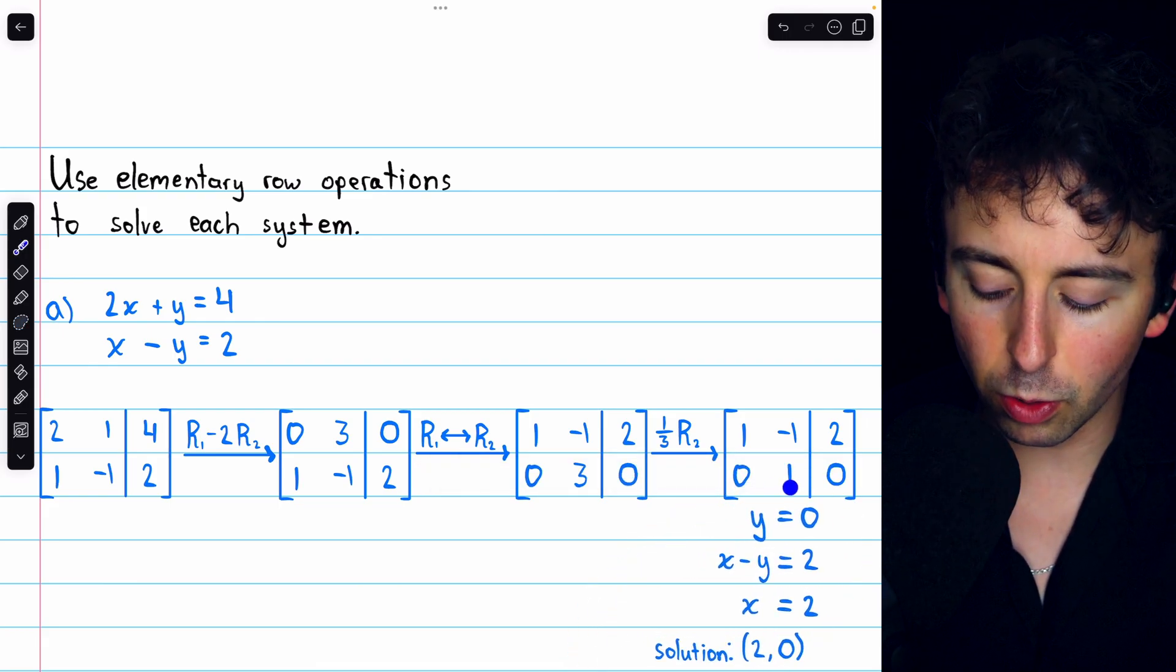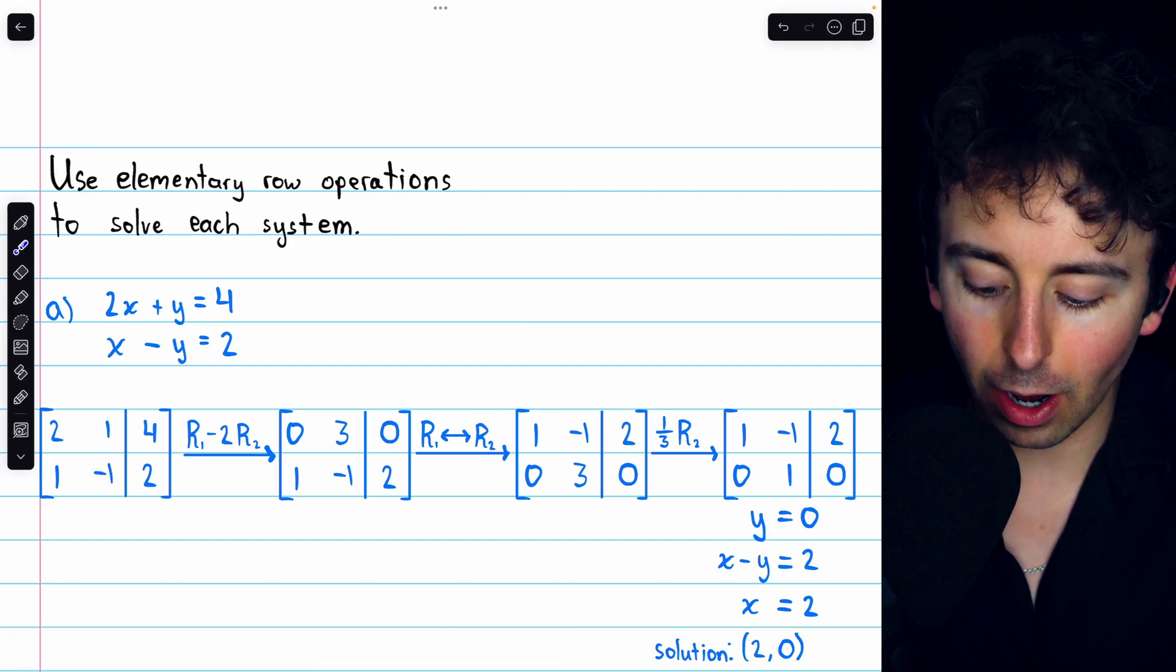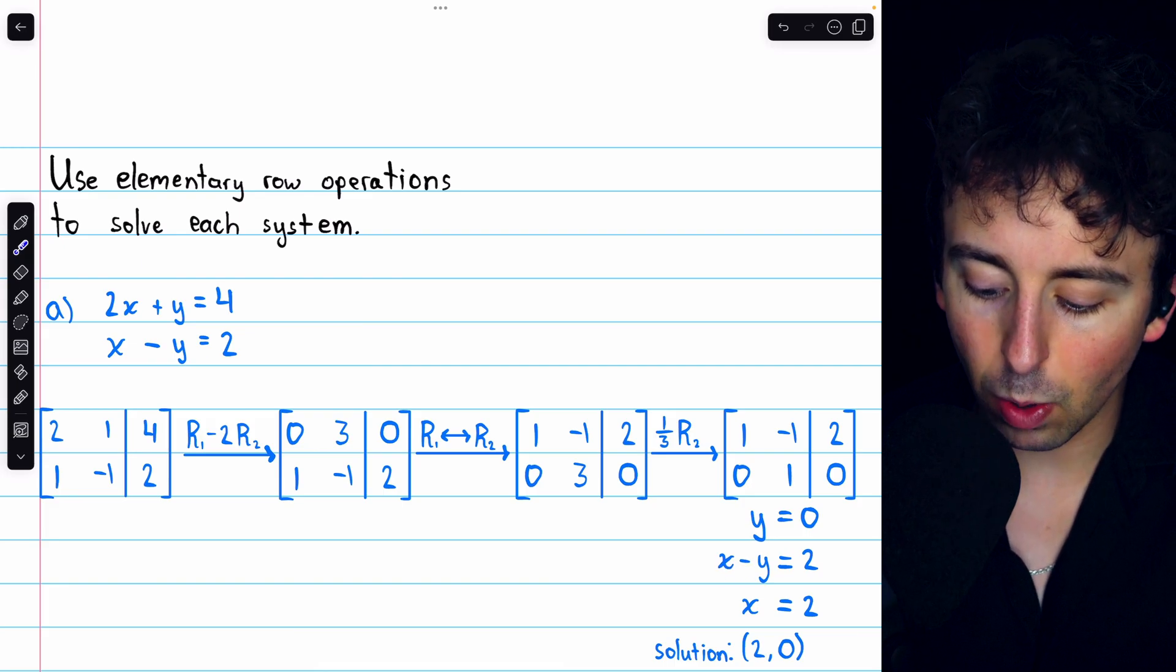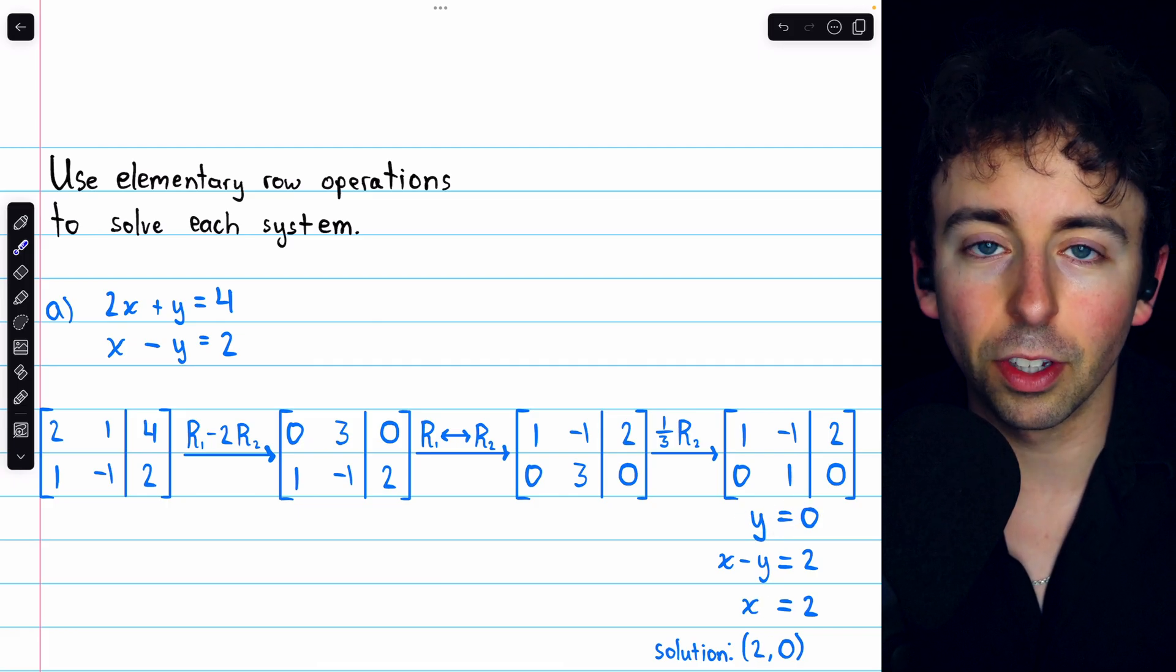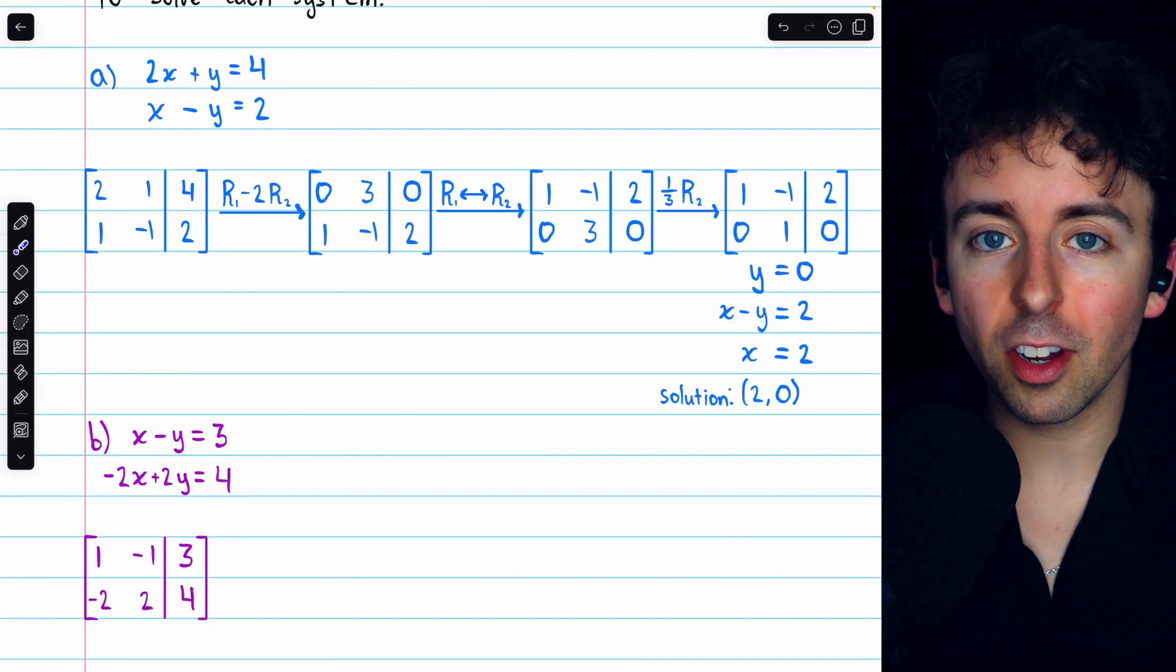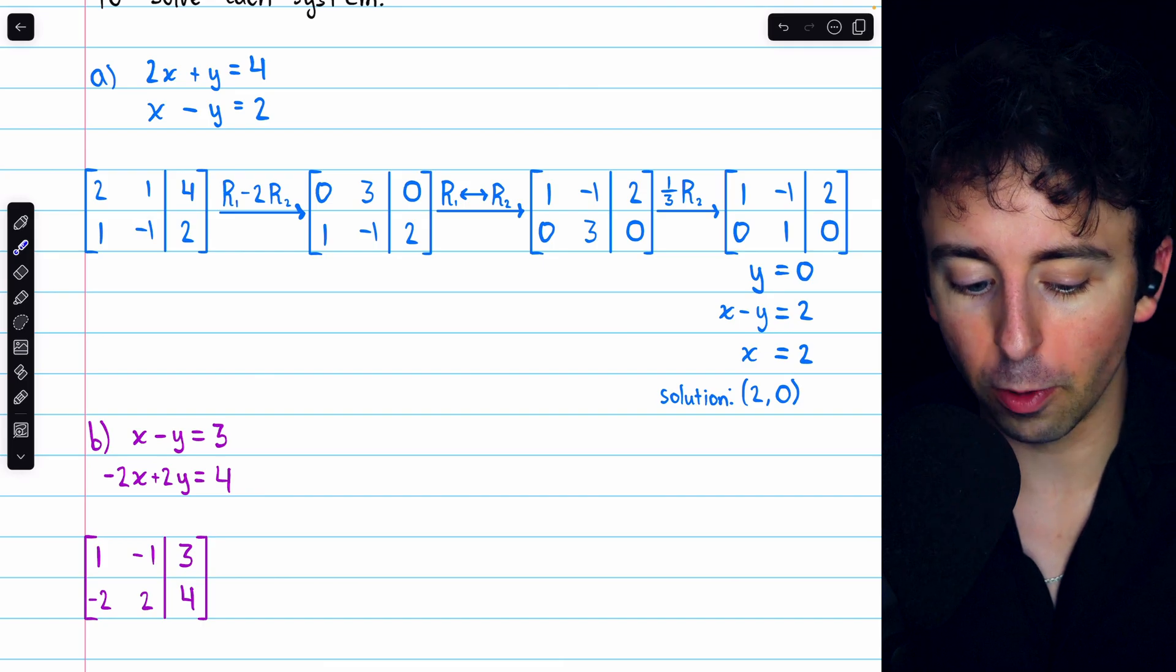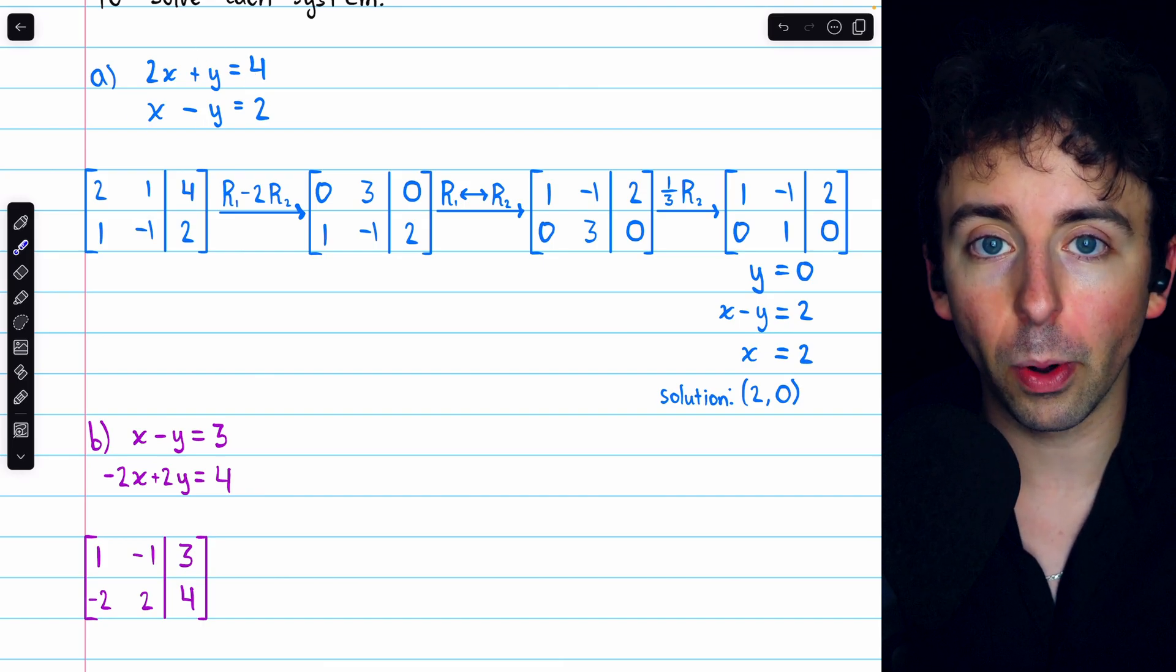From row 2, we have that 1y is equal to 0. And from row 1, we have that x minus y is equal to 2. Then, of course, because y is equal to 0, x must equal 2, since x minus 0 must equal 2. So this system has exactly one solution, x equals 2, y equals 0. This system represents two lines that intersect at a single point.